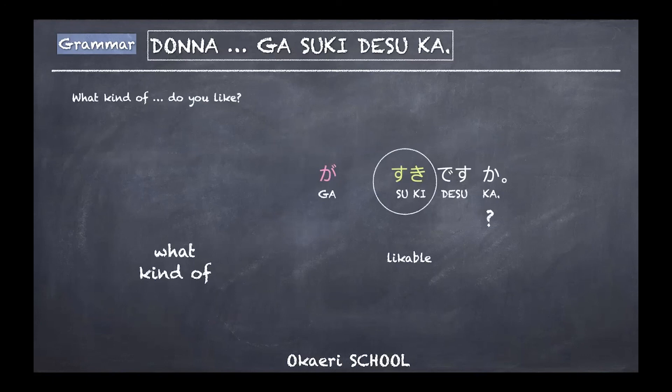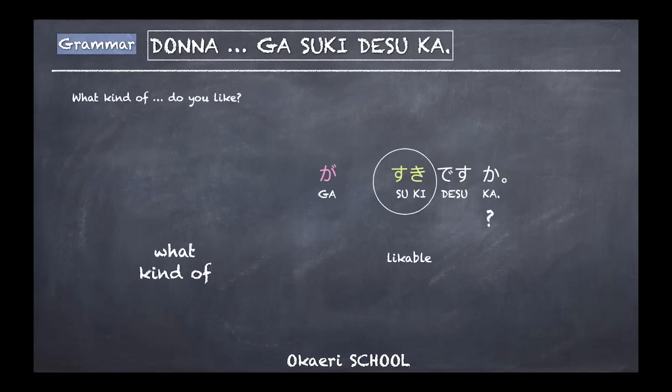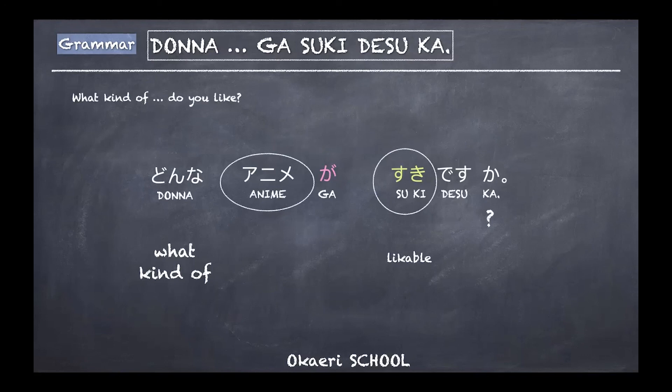For a more specific question — 'what kind of something do you like?' — you use donna, meaning 'what kind of.' For example: donna anime ga suki desu ka — what kind of anime do you like? This lets you ask more specifically about a category rather than a broad open question.